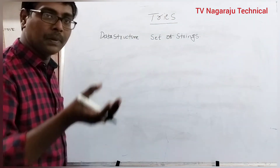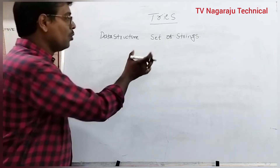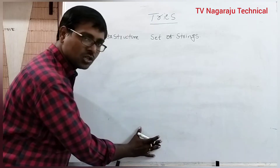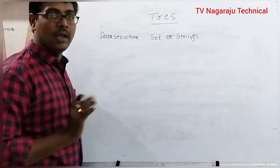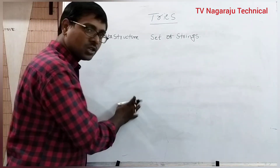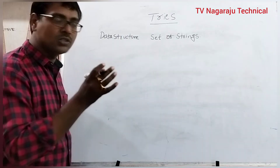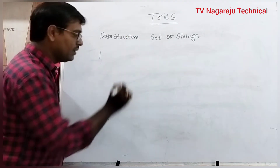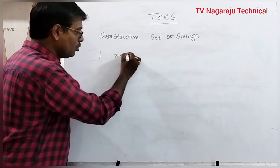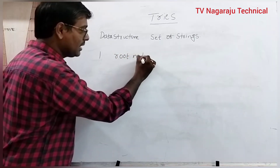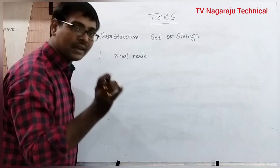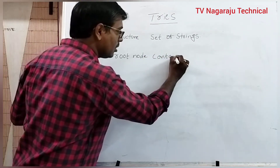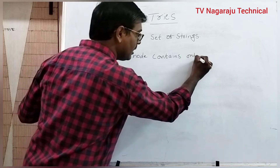At the time of representation of a string, we have to follow some rules. We are representing the strings in a tree format, and at the time of construction we have to follow some rules. The root node does not contain any character — the root node contains only null.